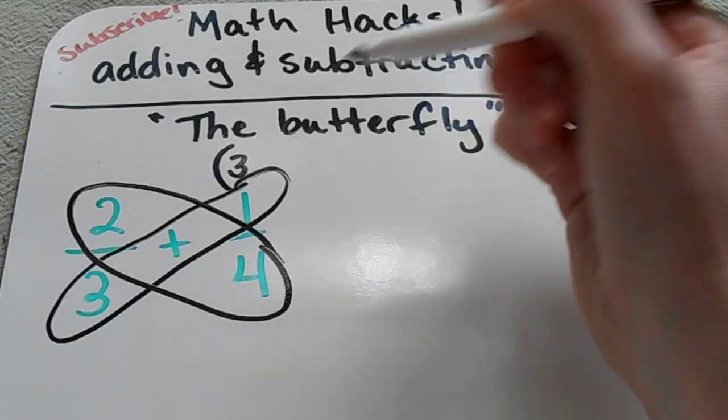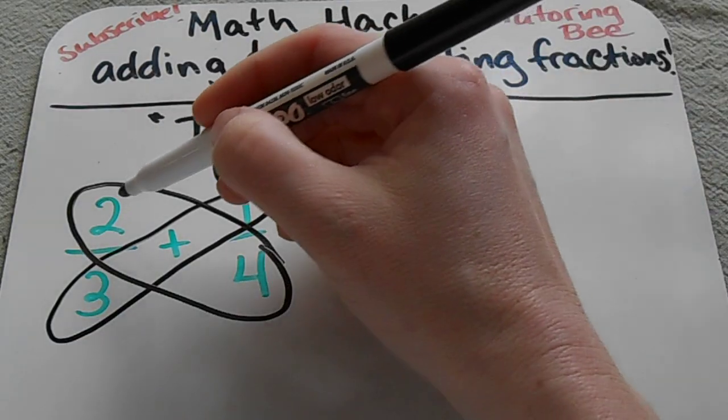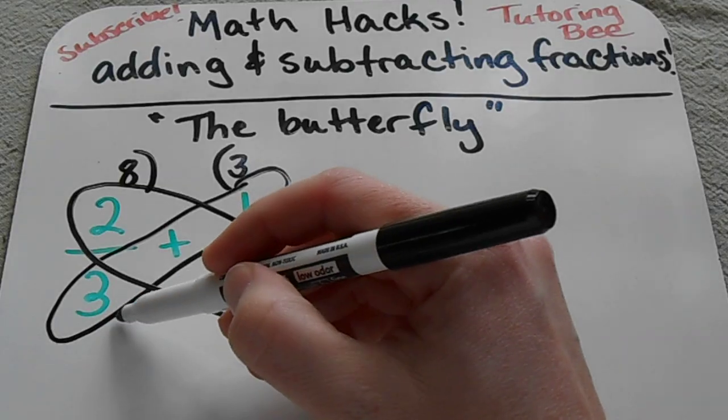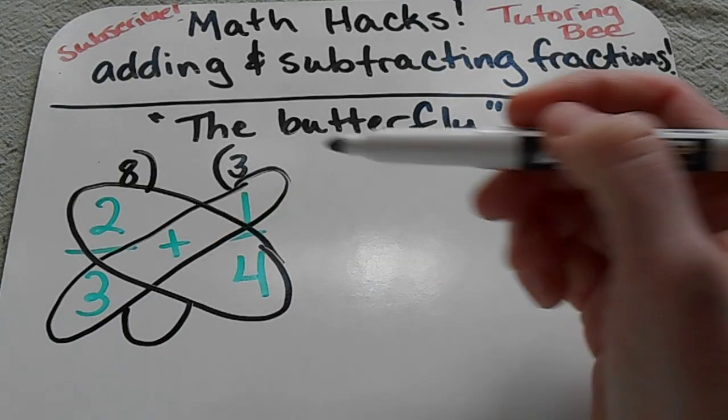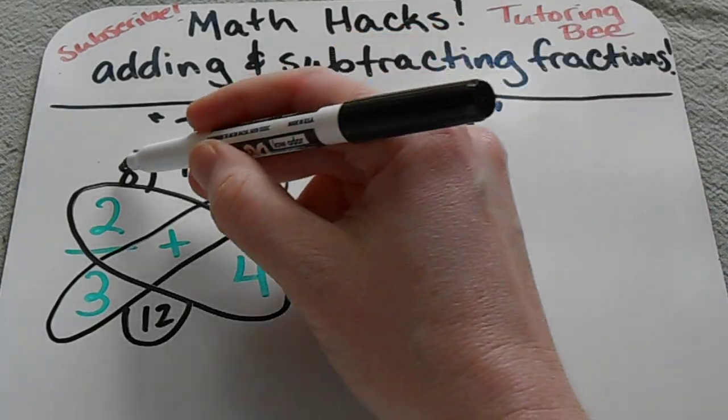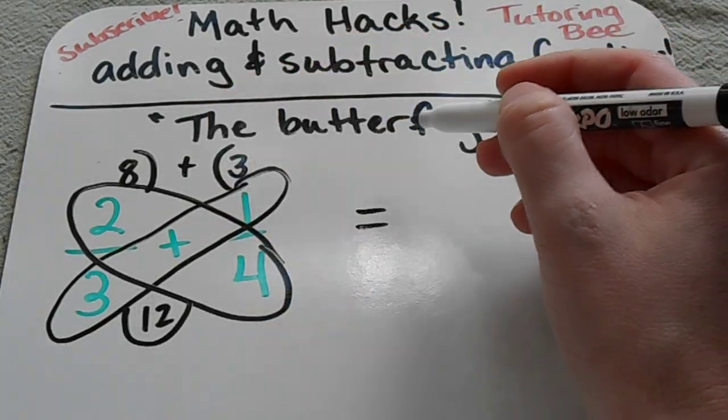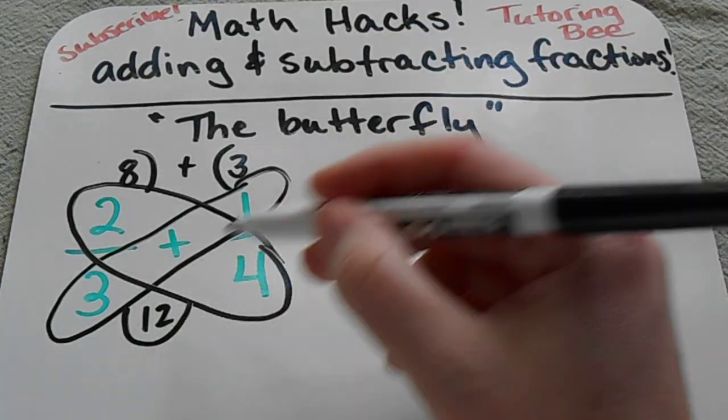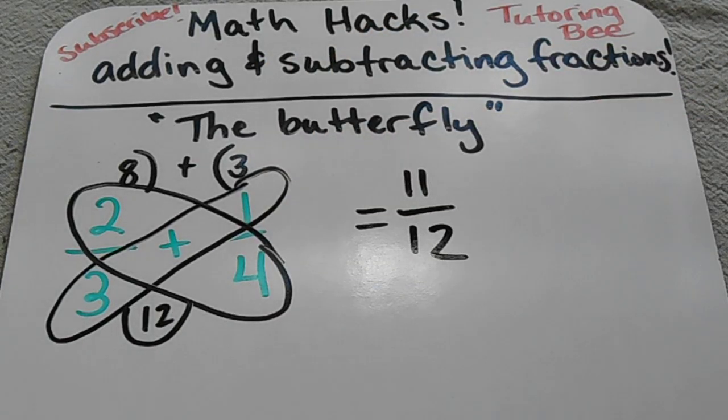And then for the other part of the butterfly, I'm going to circle those two. Two times four goes in this section right here. And then the body of the butterfly is down here. Three times four is twelve. Now I add up the numbers that I just wrote at the top. Eight plus three is eleven,